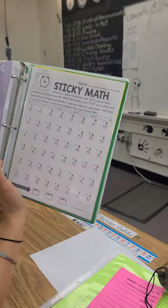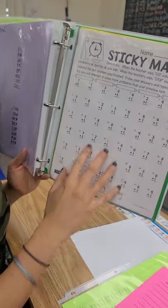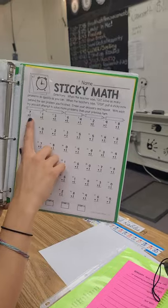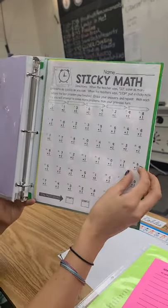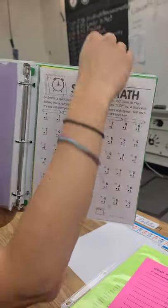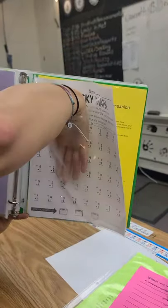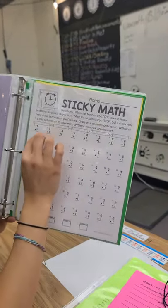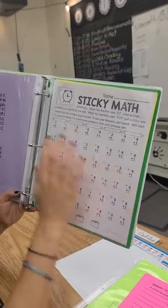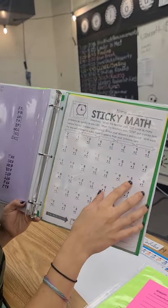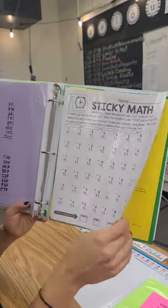So sticky math is going to be whichever facts they're on. So they might be on their plus ones, their plus twos or plus threes. And so with this, most of the time, the students will have an expo marker in here. So that way they can write on this and do it. Try to time them for a minute. See how many that they get within that minute. And then if they don't finish, have them complete all of it.